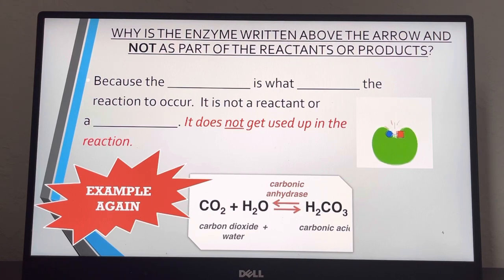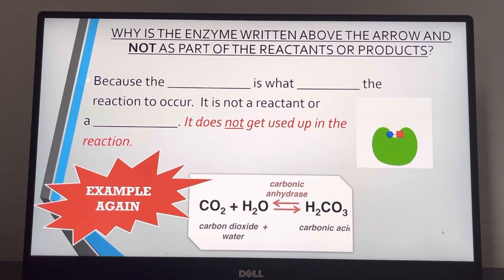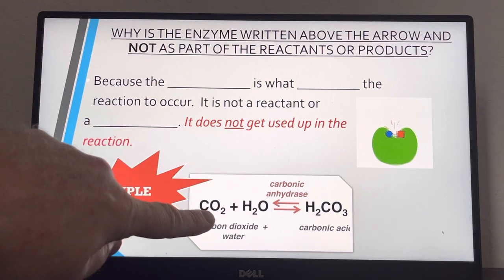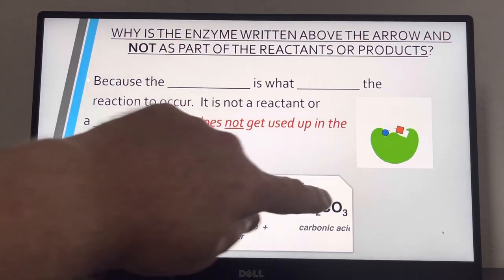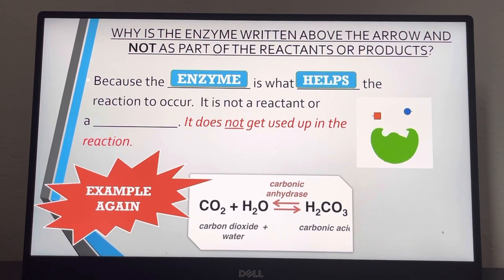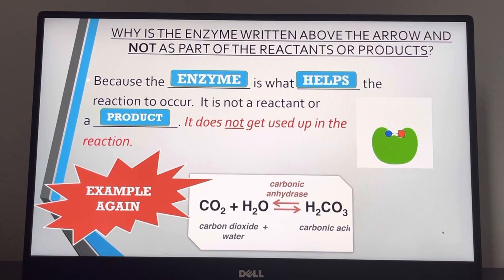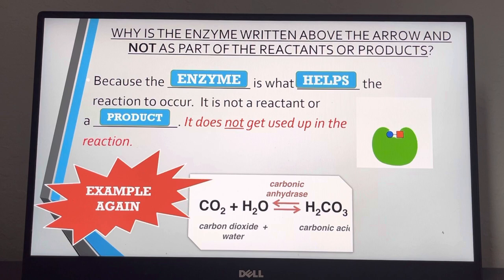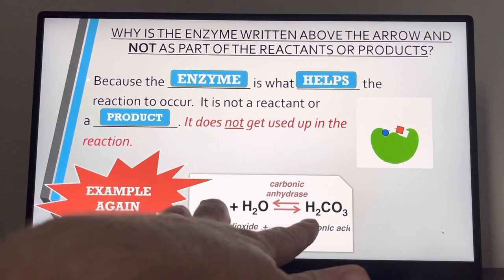Why is the enzyme written above the arrow and not as part of the reactant? Carbonic anhydrase is not written in the reactants and it's not written in the products — it's written above the arrow because the enzyme is the helper; it doesn't actually take part in the reaction. In the future, if you're required to write an enzymatic reaction, know that the enzyme goes over the arrow, not on the reactant side (left) or the product side (right).